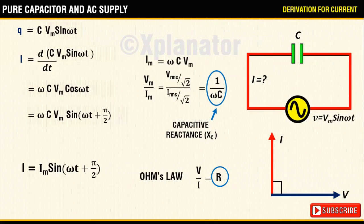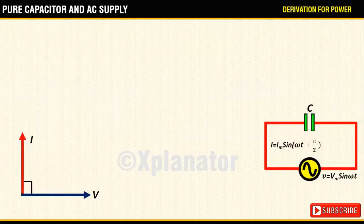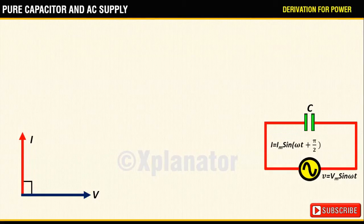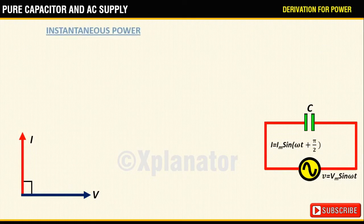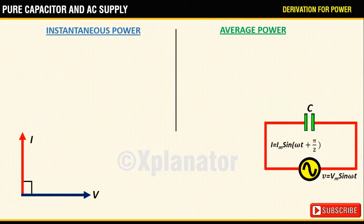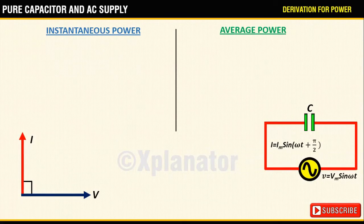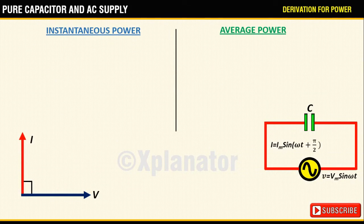Now that we have the equations for voltage and current, let us calculate the power dissipated in the circuit. The power consumed in a circuit is of two types: instantaneous power and average power. Instantaneous power is what is consumed at the moment, while average power is the power consumed over the entire cycle.